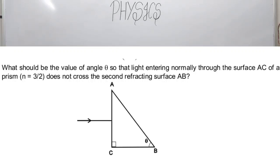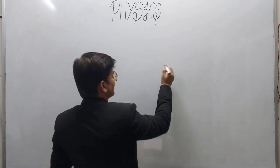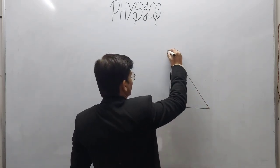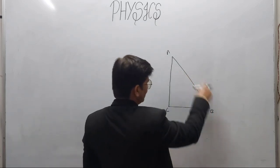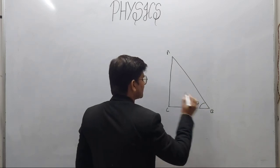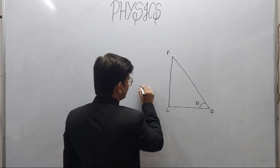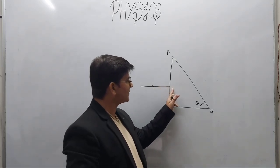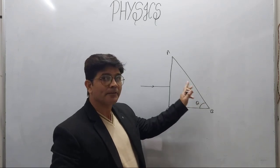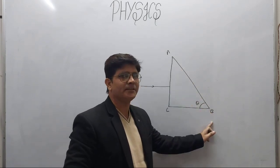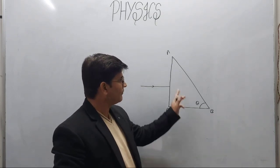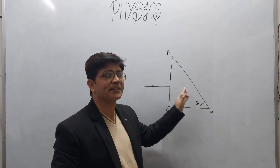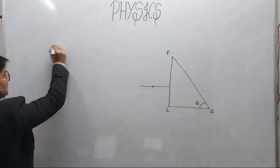The diagram given in the question shows a prism. This surface is AC, this is the prism ABC, and this angle is given as theta in the question. According to the question, a ray of light strikes the surface AB. The question says that light entering inside the prism should not cross this surface AB. The refractive index of the prism material is given as 3/2.